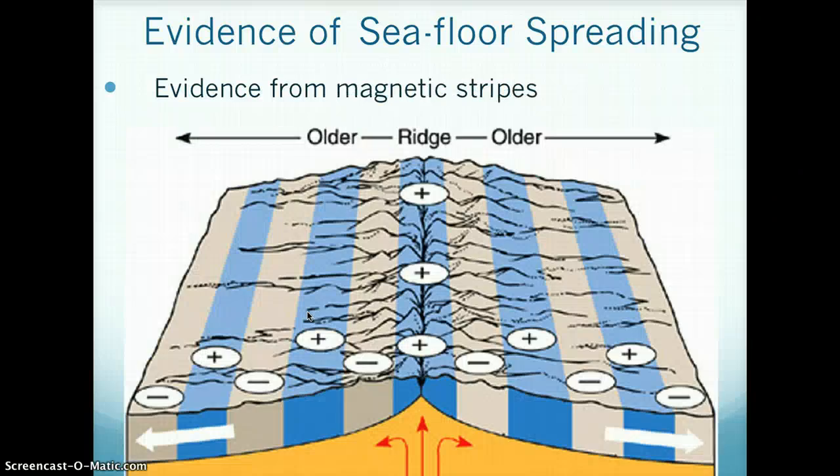A second piece of evidence is from magnetic stripes. When magma is released, it contains magnetic material that lines up with Earth's poles. Magnetic stripes on each side of the mid-ocean ridge are mirror images, which shows the ridges separate at the same time and rate. This image shows magnetic strips near the mid-ocean ridge — if you look at the positives and the negatives, the pattern is the same on each side. They are mirror images.